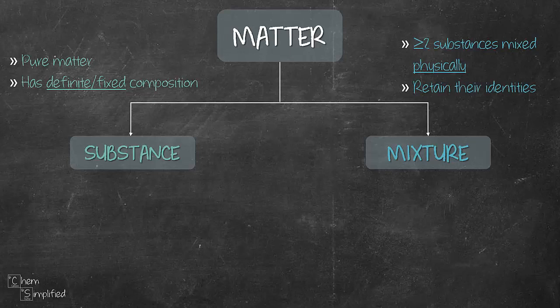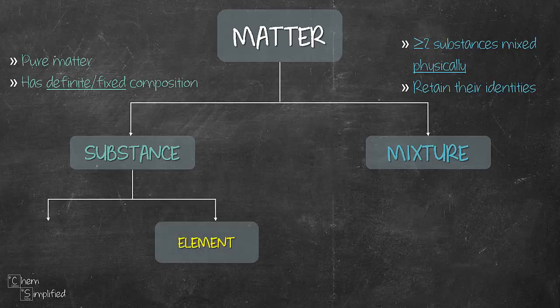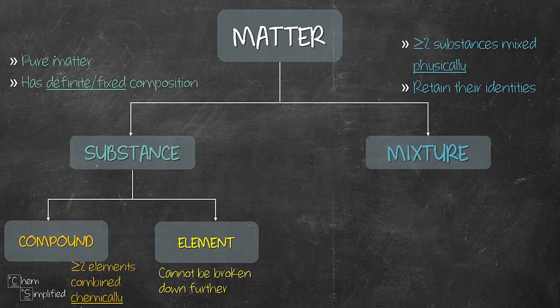Going back to substance, it can be further classified into element and compound. Element is the most elemental substance. It cannot be broken down further chemically. Compound, on the other hand, is made out of two or more elements which were combined chemically.